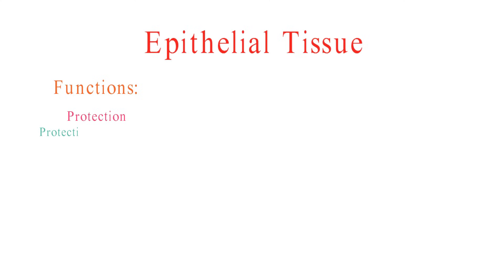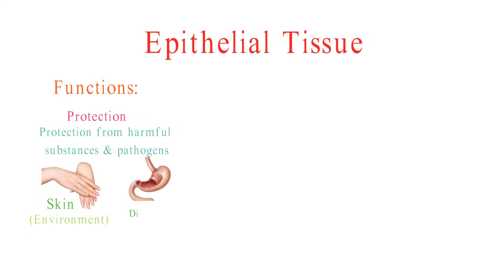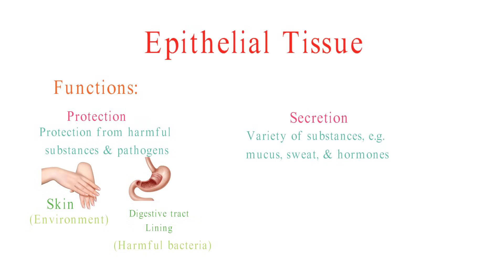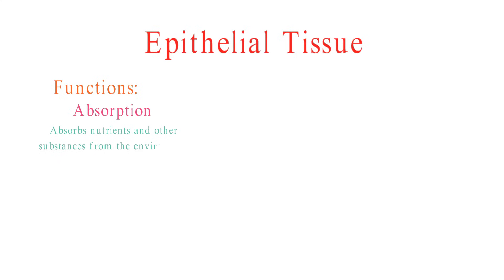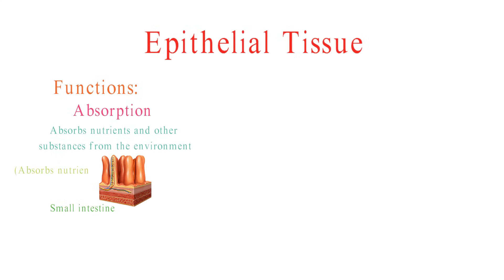Epithelial tissue helps protect the body from harmful substances and pathogens. For example, the skin protects the body from the environment, and the lining of the digestive tract protects the body from harmful bacteria. Epithelial tissue secretes a variety of substances, including mucus, sweat, and hormones. For example, the sweat glands secrete sweat, which helps to cool the body. It also absorbs nutrients and other substances from the environment — for example, the small intestine absorbs nutrients from food.